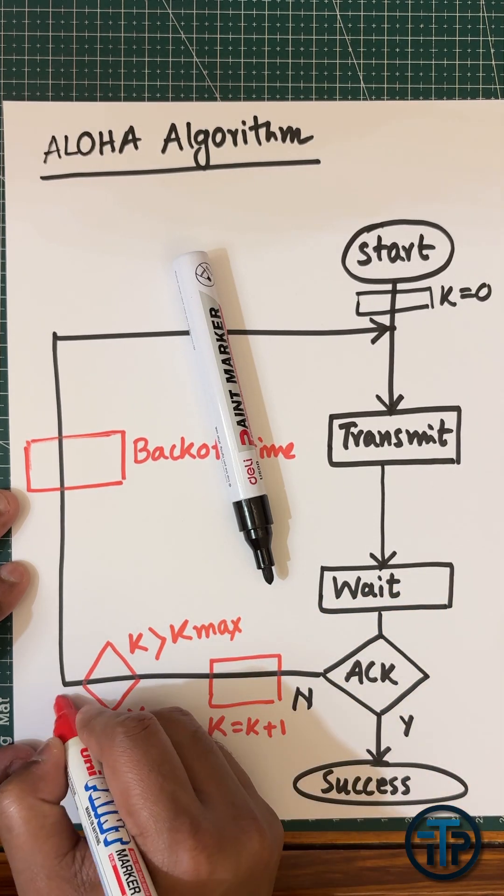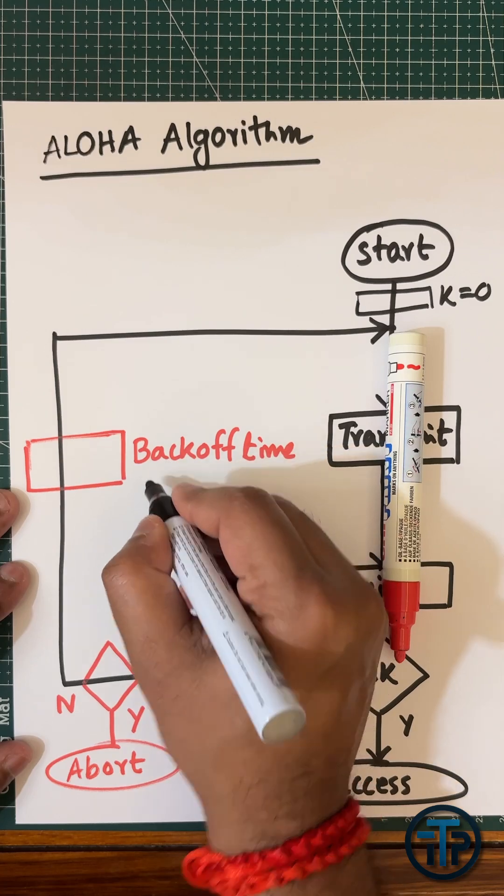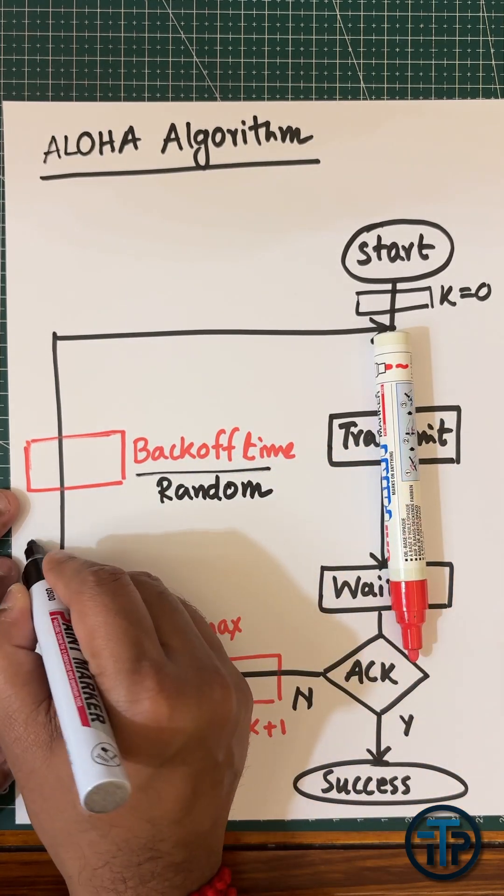We have to fix a maximum number, K < K_max. If yes, then you continue. If no, you have to abort. Since the backoff time uses a random number, what will be the random number?